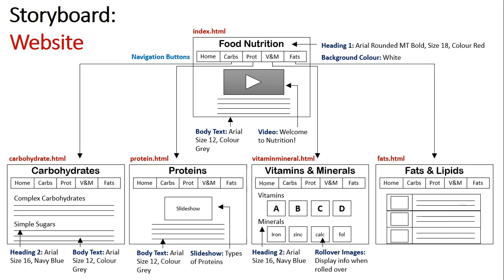Finally there is a page on fats, where we have a table outlining the different types of fats — the left column has images and the right column has descriptions. This sample demonstrates the benefits of storyboards in illustrating and planning different types of software and information systems. We have a hierarchical layout showing the home page, with sub-pages accessible via navigation buttons, and we are looking for consistency within design elements to plan a cohesive website with a good feel representing what we are going for.